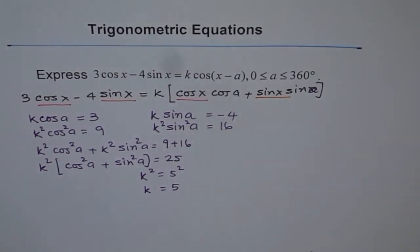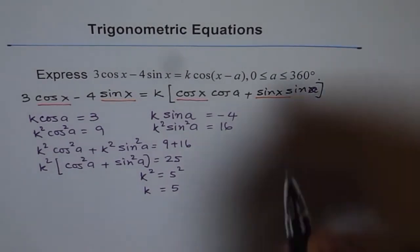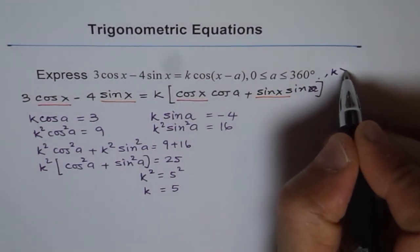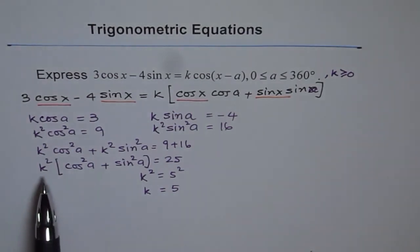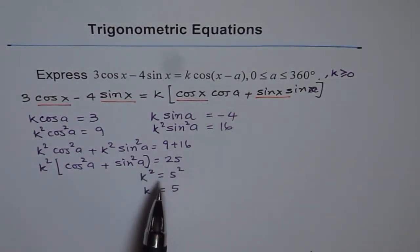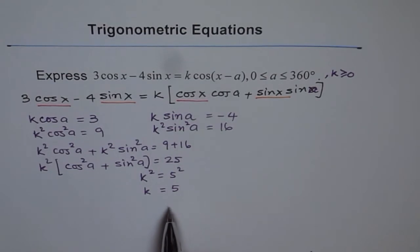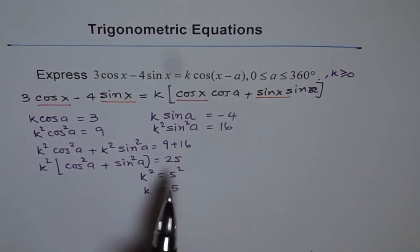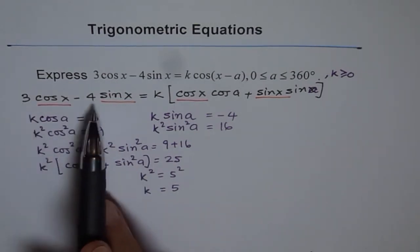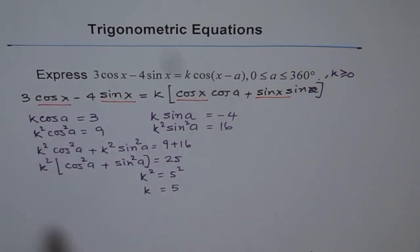We are assuming k is a positive value, k greater than or equal to 0. Otherwise, when we have k² equals 25, we could have written plus or minus, so k could be both. But let's consider k to be positive. In that case, k equals 5. You can see from here, k is the square root of 3² plus 4², the coefficient squares. That is how we get the value of k.